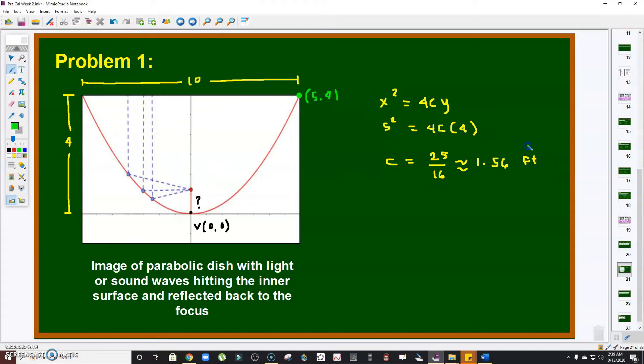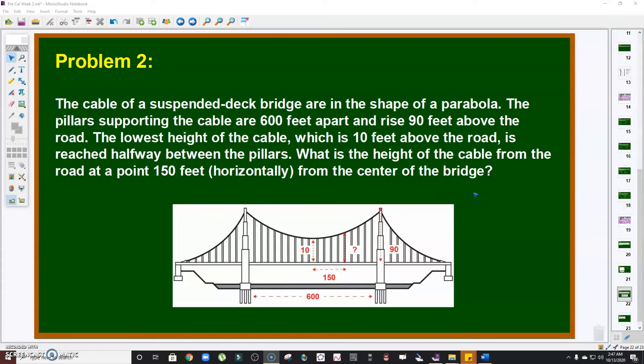Problem number two: The cable of a suspended deck bridge is in the shape of a parabola. The pillars supporting the cable are 600 feet apart and rise 90 feet above the road. The lowest height of the cable, which is 10 feet above the road, is reached halfway between the pillars. What is the height of the cable at 150 feet horizontally from the center of the bridge?